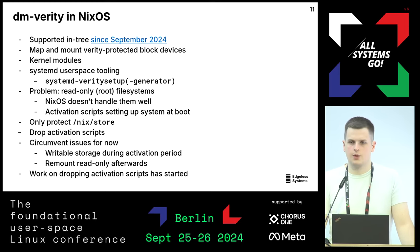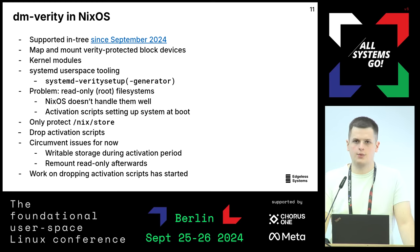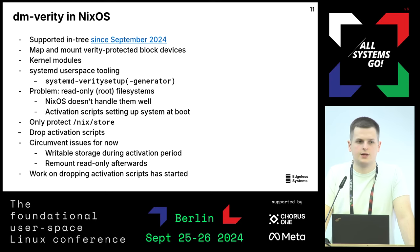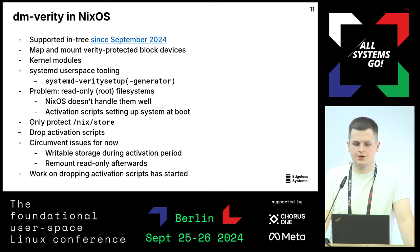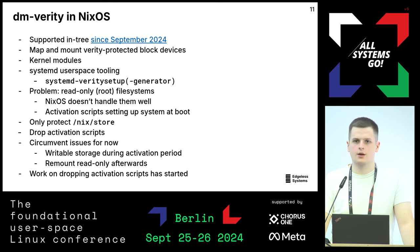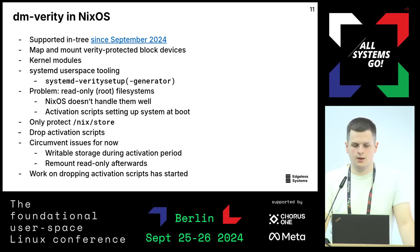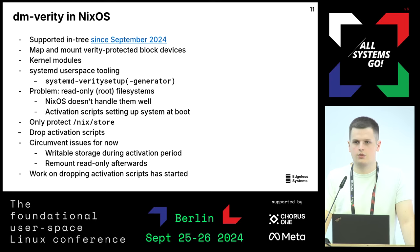The long-term fix is dropping the activation scripts in image builds and building static OS trees instead. In an image-based system you don't want to live-switch later, you can just build a static tree. This is currently not possible due to Nix sandbox limitations that would need to be loosened. For now, the workaround is overlay-mounting a writable filesystem while activation scripts run, then remounting read-only afterward. The upstream work has already started to drop activation scripts for image builds, as they are generally considered not good for image-based systems.